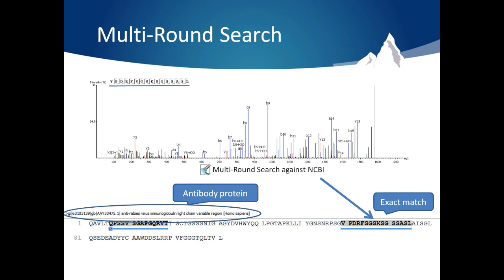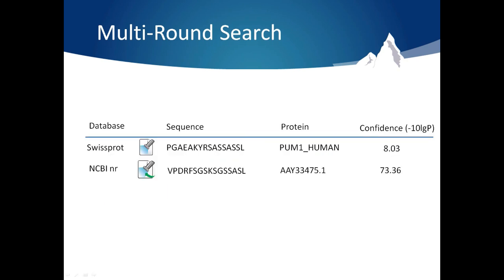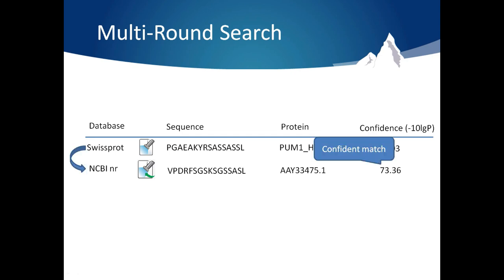Here is a summary of the hits we were able to find with this spectrum. Searching SwissProt, we identified an unexpected protein with a low score, likely a false positive. Now with Multi-Round Search, we achieve ideal results where we identified a peptide from an antibody protein with a high score and no mutations.